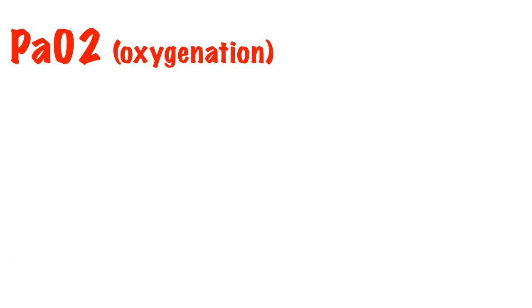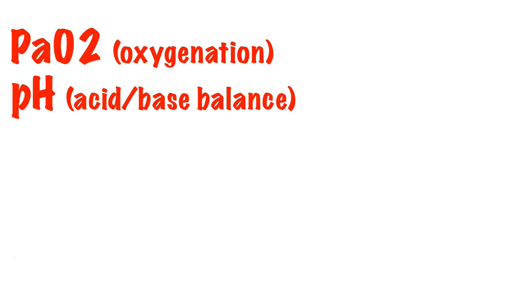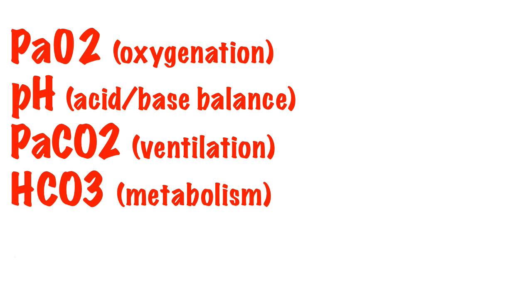They measure the partial pressure of oxygen in the blood, the pH of the blood (how acidic or alkalotic the patient is), the partial pressure of carbon dioxide in the blood, the level of bicarbonate in the blood, and the calculated amount of excessive base within the blood, termed the base excess.